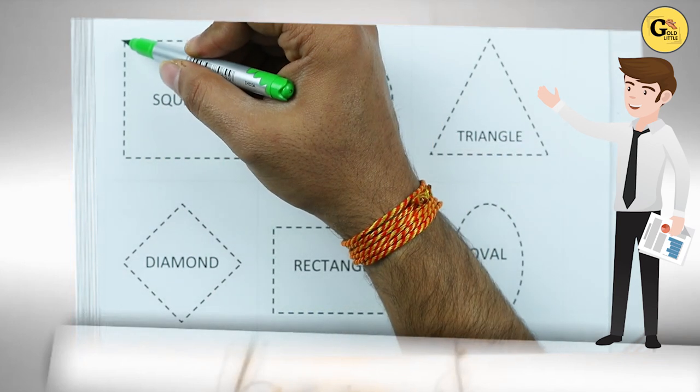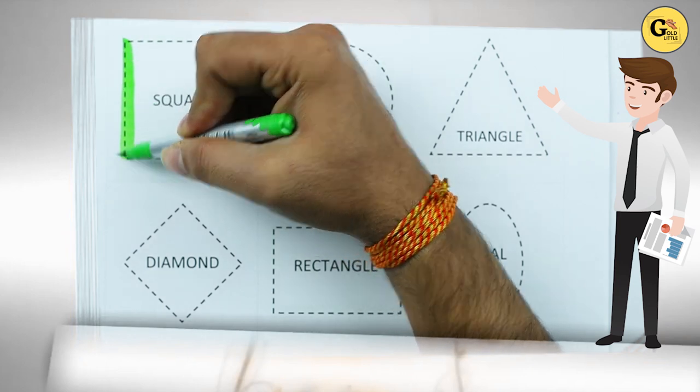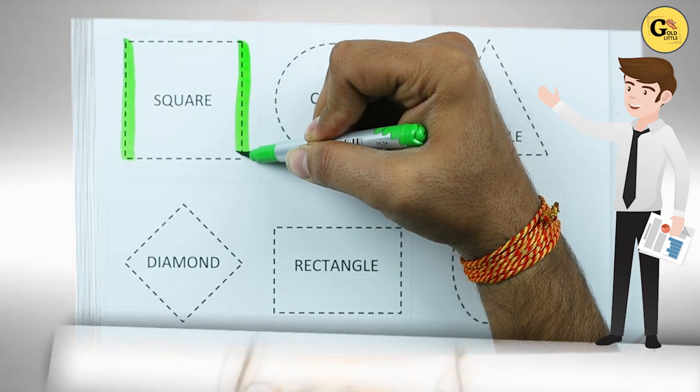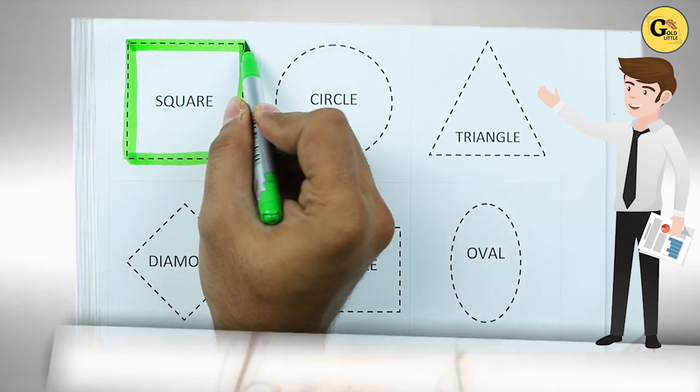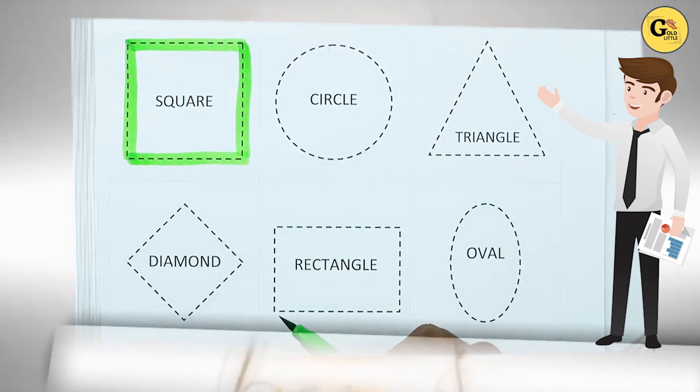It's square. One line, two line, three line, four line, two sleeping line, two standing line.